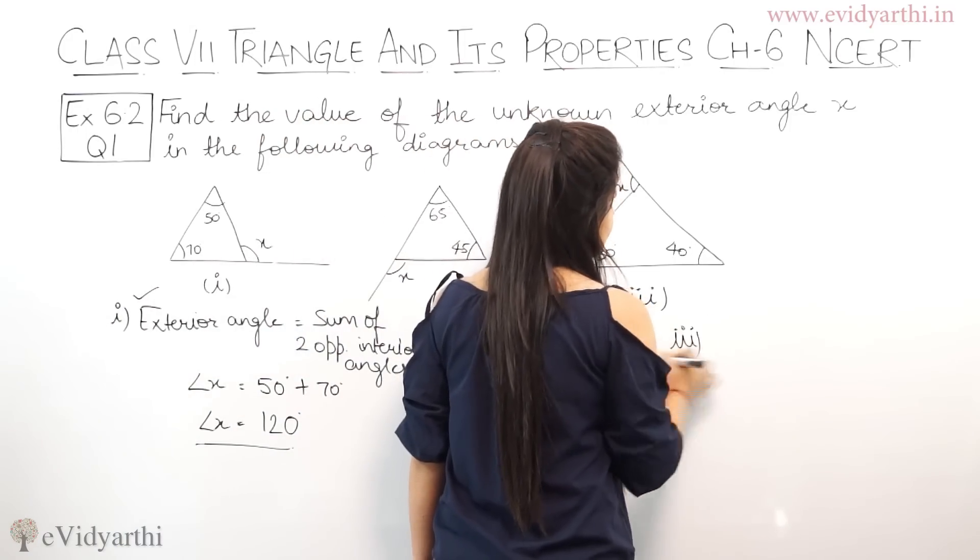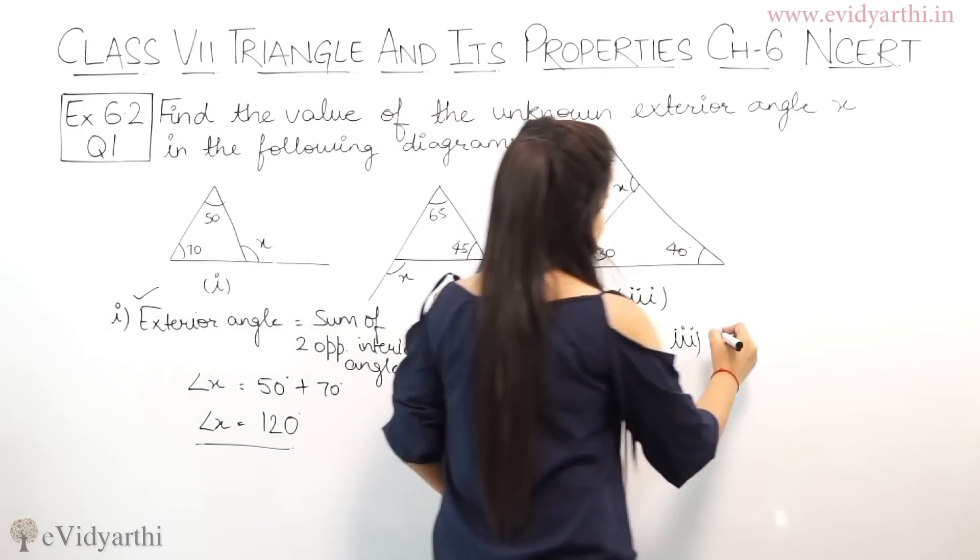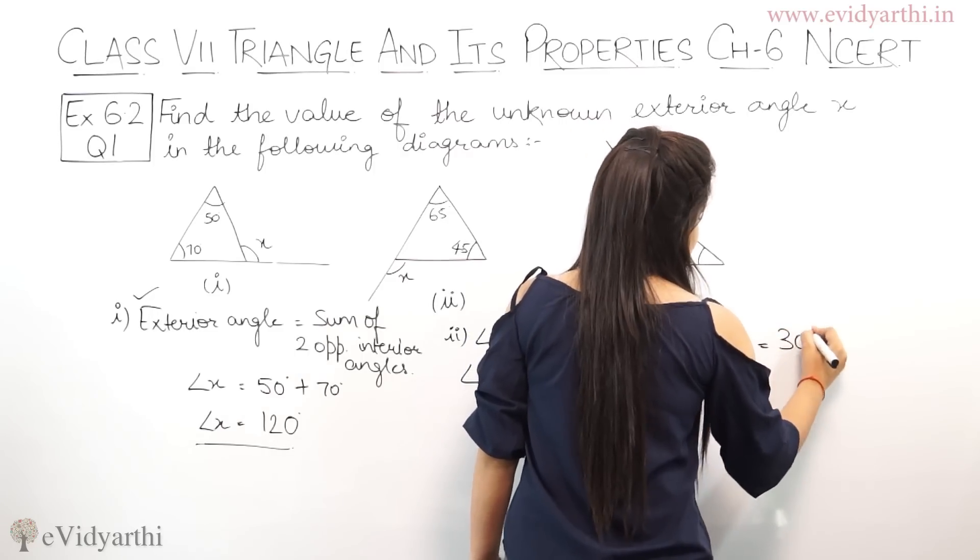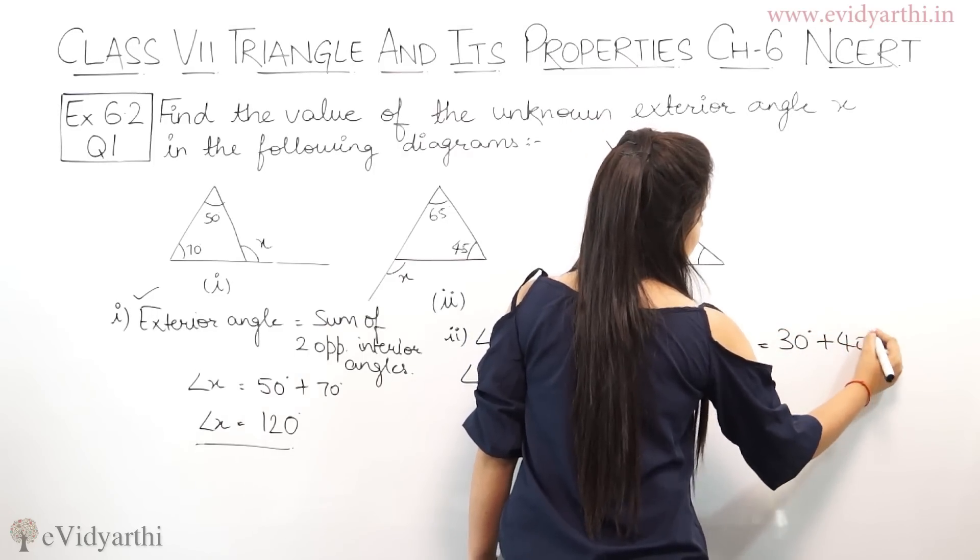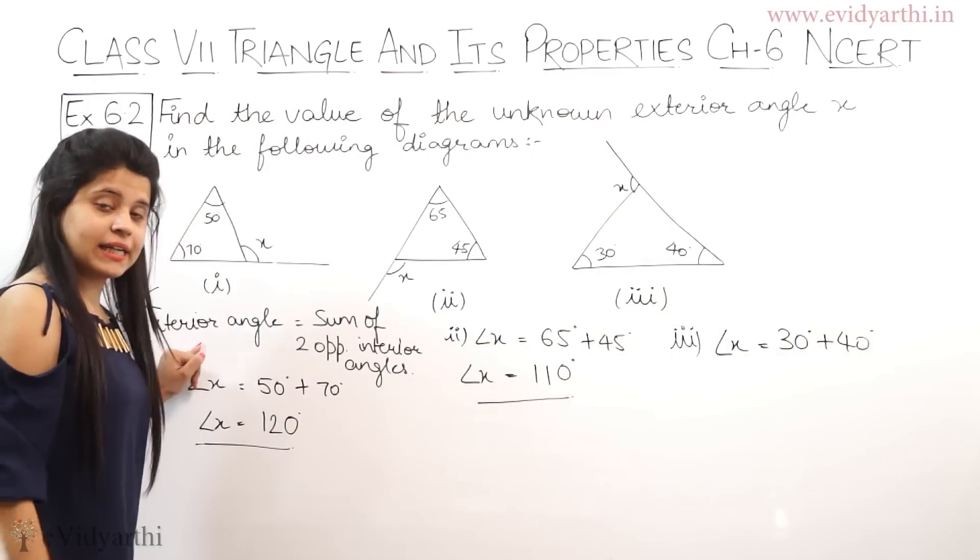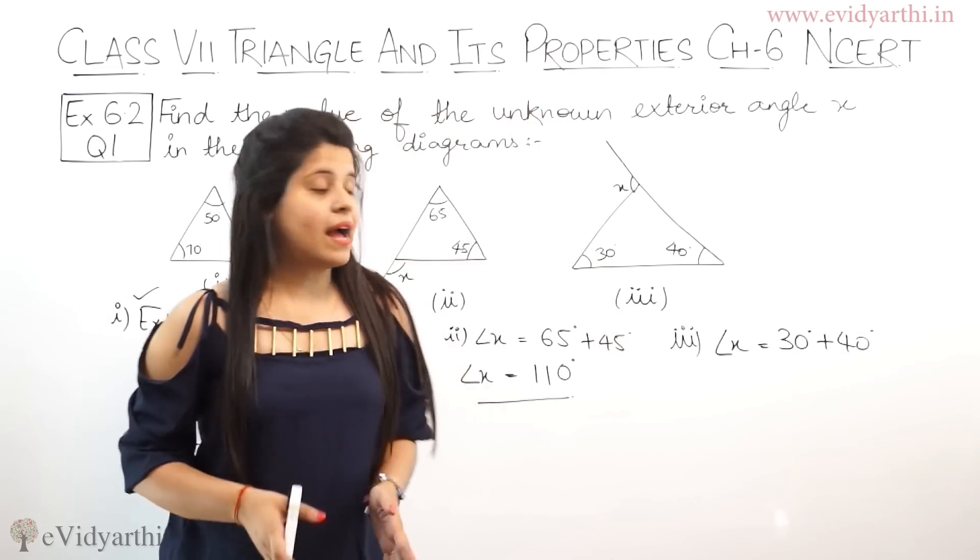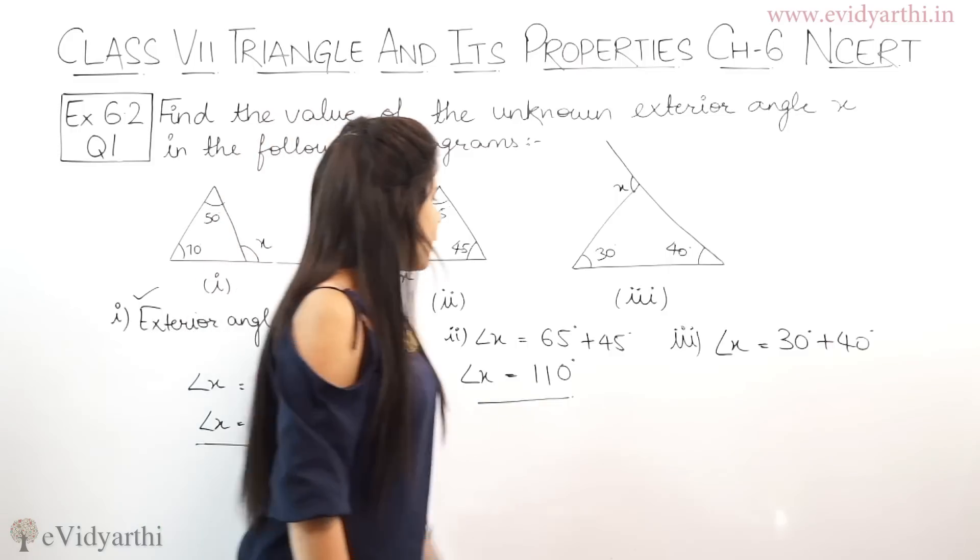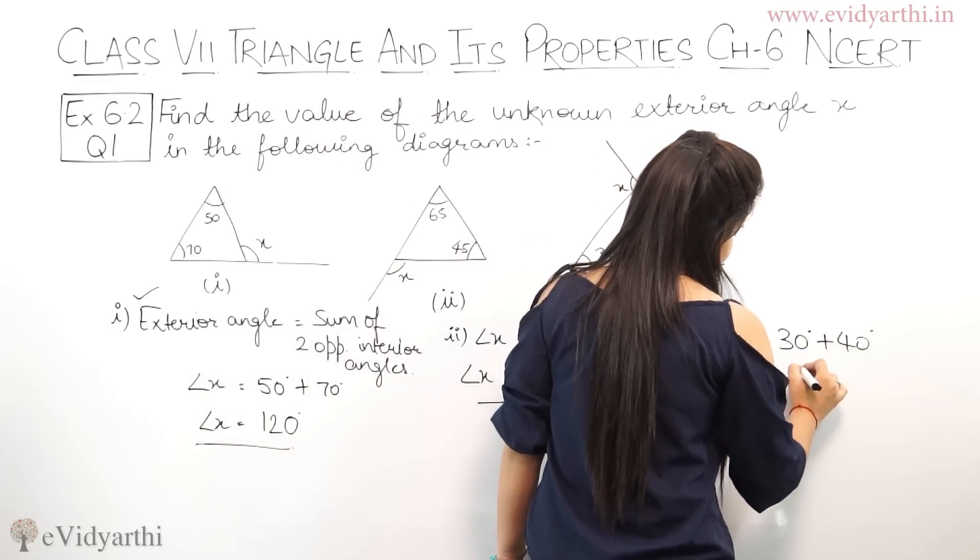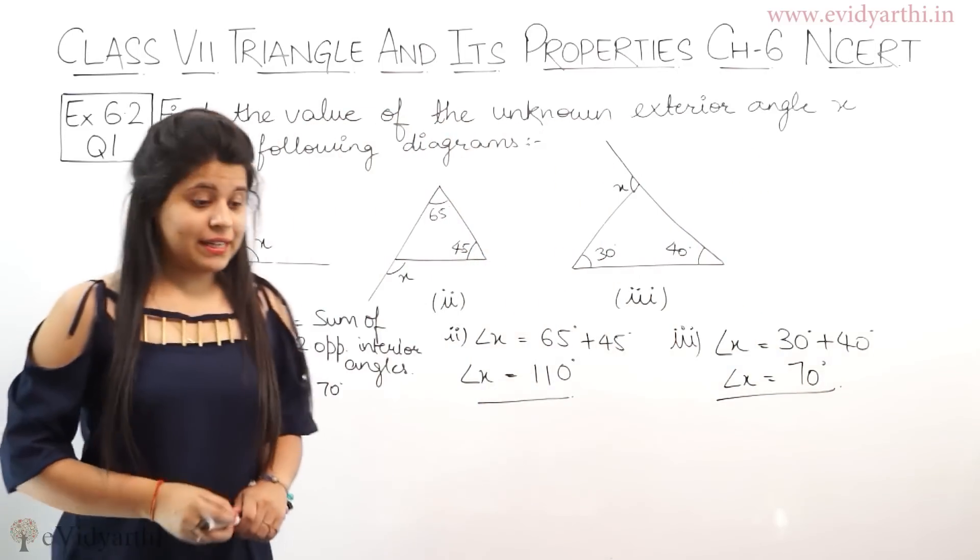Again, you have two opposite interior angles given here. Angle X equals to 30 degree, 30 plus 40 degree. In this place, you have to mention this property in the bracket, exterior angle property of triangle. 30 plus 40 will be 70 degree. Angle X equals to 70 degree. Let's come to the remaining parts.